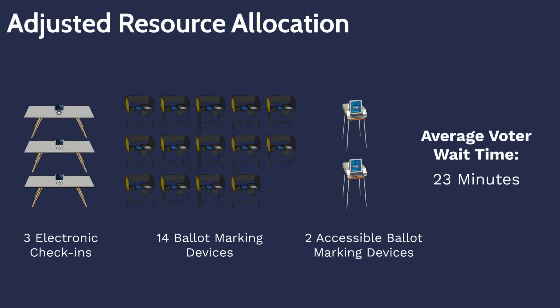In order to ensure voters wait less than 30 minutes to vote, the two-step process must allocate three check-ins and 16 ballot marking devices — two of which being accessible — to serve 1,500 voters.